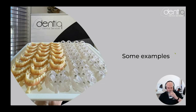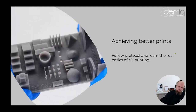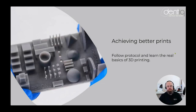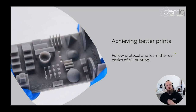So how can we achieve good — or better — prints? Follow protocol every single time. If you keep changing something and something goes wrong, you won't know where the failure occurred. Always follow protocol in any manufacturing environment. Also, understand the basics of 3D printing — when you truly understand them, you can both achieve better results and quickly identify where things went wrong.